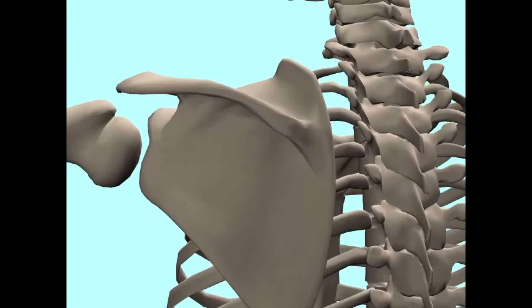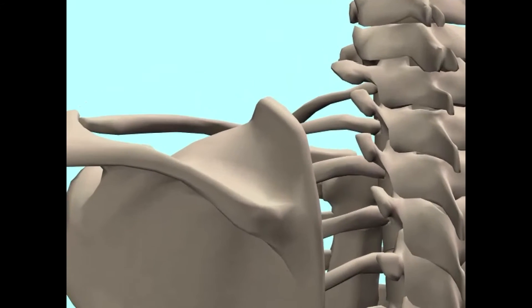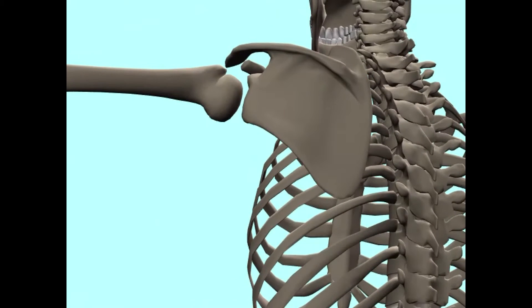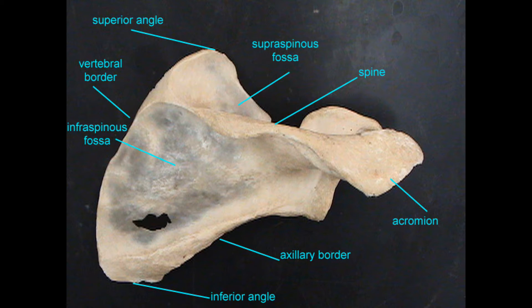The scapula is roughly triangular in shape with a superior angle facing superiorly and an inferior angle facing inferiorly.